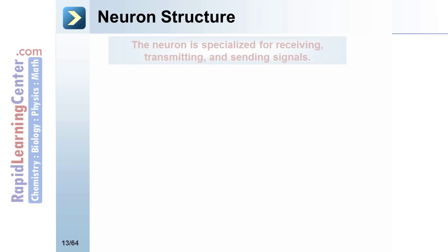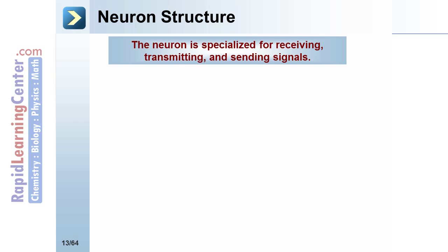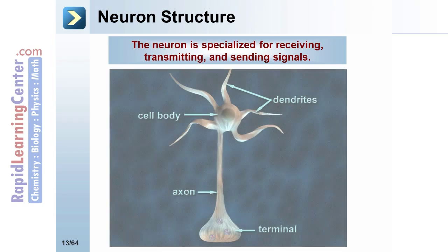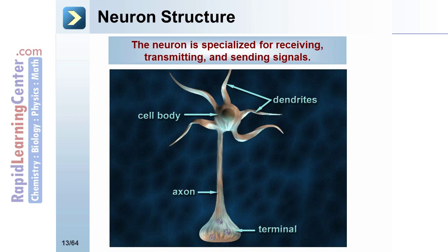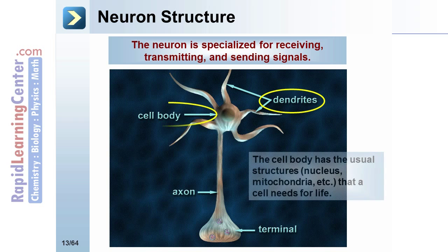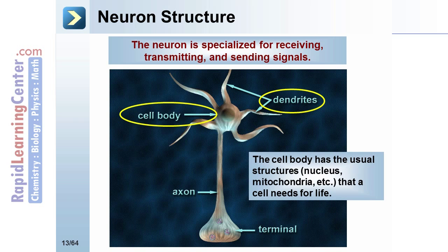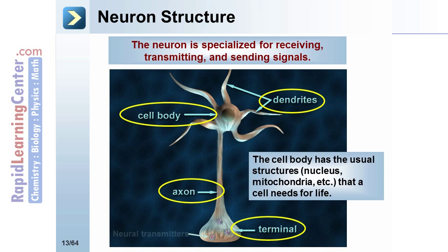Neuron structure: the neuron is specialized for receiving, transmitting, and sending signals. It consists of a cell body and dendrites, and it also has the usual structures a cell needs for life, such as a nucleus and mitochondria. It has an axon, a terminal section, and neural transmitters.